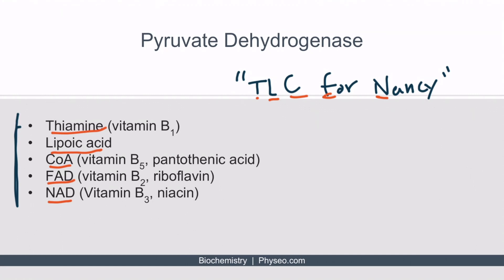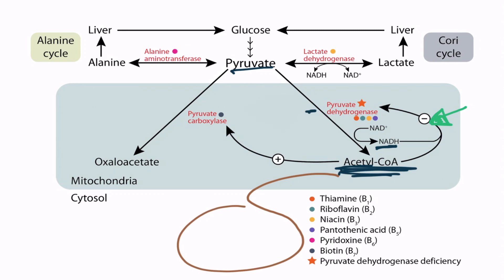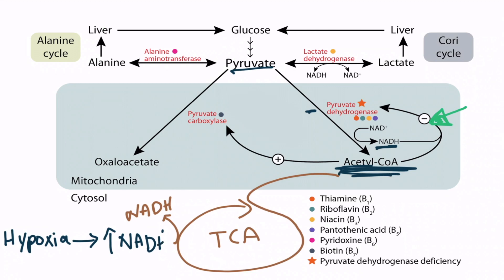Now let's discuss how pyruvate metabolism is regulated. The conversion of pyruvate to acetyl-CoA via pyruvate dehydrogenase occurs in many different cells — let's say this is taking place within skeletal muscle tissue. Both NADH and acetyl-CoA inhibit pyruvate dehydrogenase. The TCA cycle's major product is NADH, which is normally used in the electron transport chain to generate ATP when oxygen levels are high. Under hypoxic conditions, NADH cannot be used and accumulates, which then inhibits pyruvate dehydrogenase. So hypoxia results in increased NADH, which inhibits pyruvate dehydrogenase.